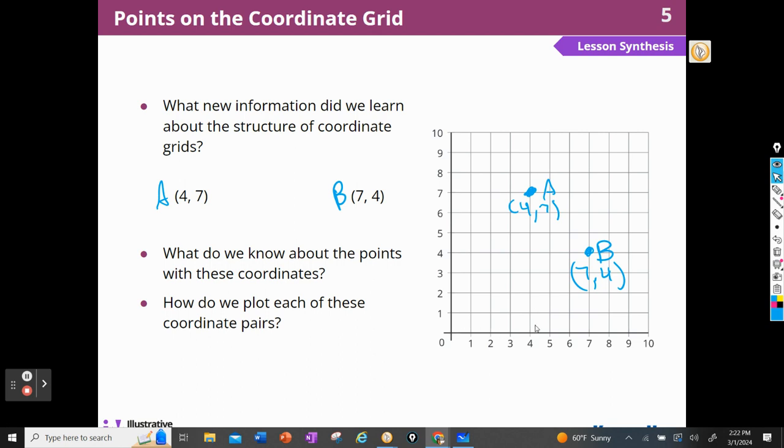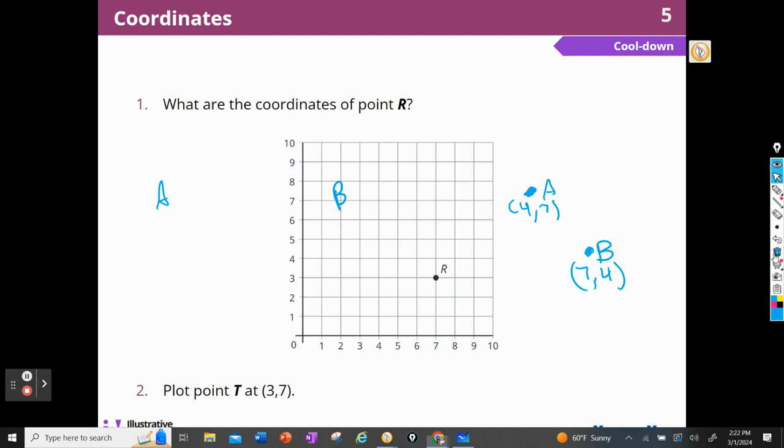So we always go over with the first number and up for the second. All right, so now we're going to test it and see if you can do it. What are the coordinates of R? Well, R is going to be, open parentheses, I went over 7, right? It's on the line for 7, and up to 3, close parentheses. And now they want me to plot 3, 7 at T. So that means I go over 3 and up 7, T. There we go.